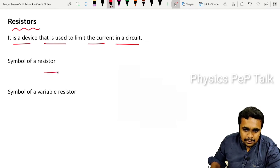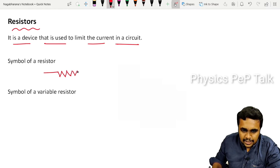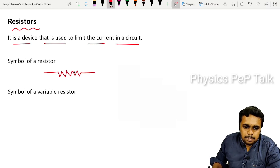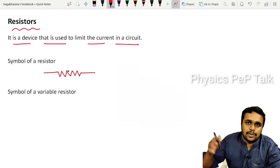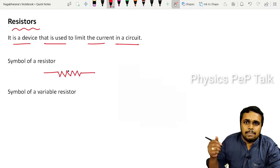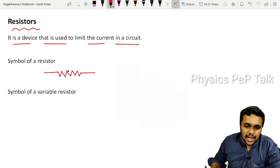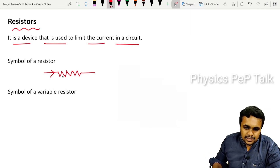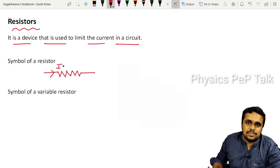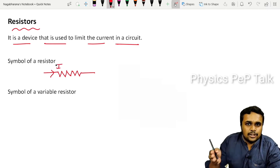The symbol used for a resistor in a circuit diagram looks like a speed breaker — like a bump on the road. Just as a speed breaker slows down vehicles, this type of device — a resistor — will slow down the movement of charge and limit the current.